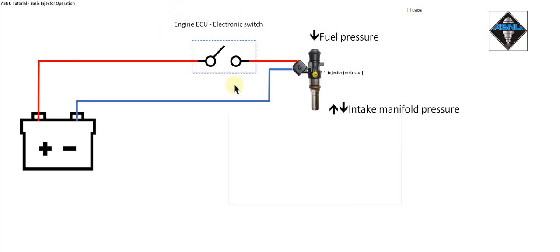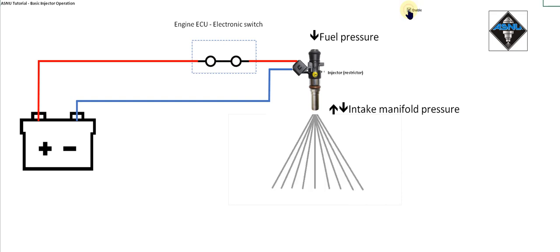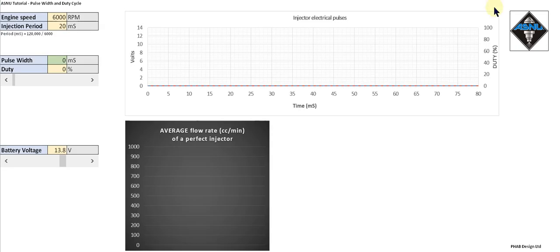Our engine ECU electronic switch pulses the injector, and the injector squirts fuel. Let's have a look in a little more detail at the electrical pulses to the injector and the flow rate from the injector.